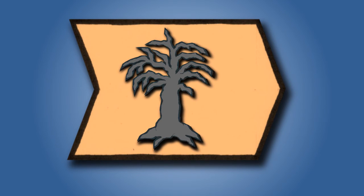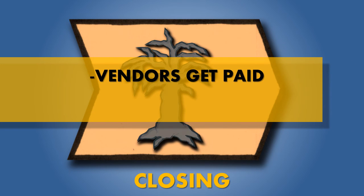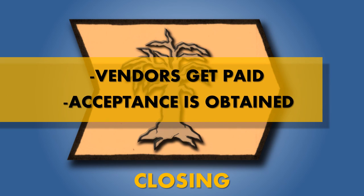After all the deliverables of the project are created, the closing process group still has to close the overall project and provide the deliverables to the customer. Vendors need to get paid and accounts need to be updated. It's during this process when the formal acceptance of the product or service is obtained from the customer, and there is an orderly close to the project.